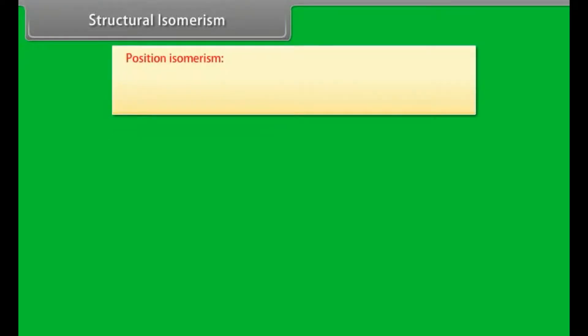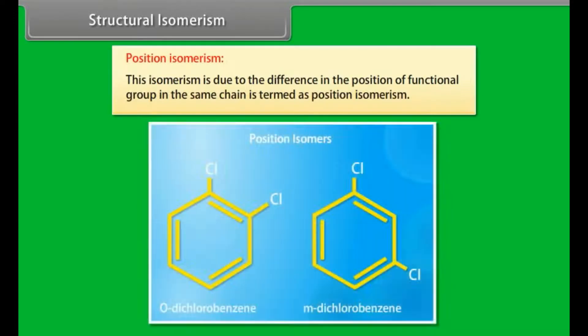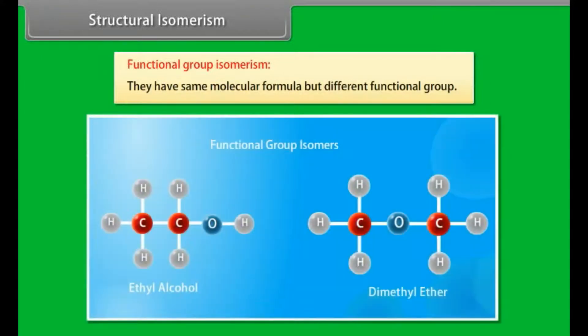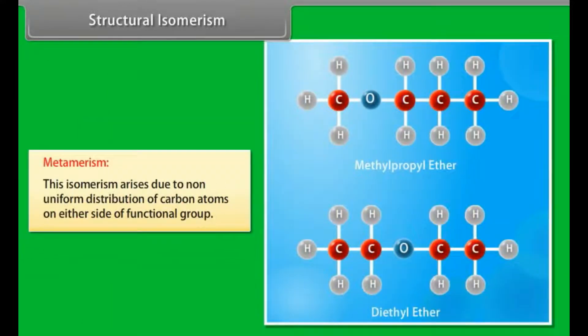Position isomerism is due to the difference in the position of a functional group in the same chain. Functional group isomerism: compounds have same molecular formula but different functional groups.